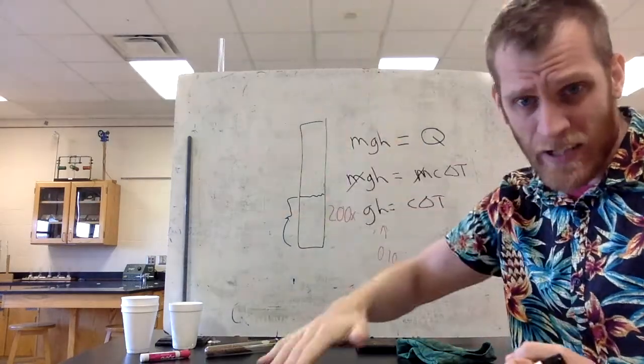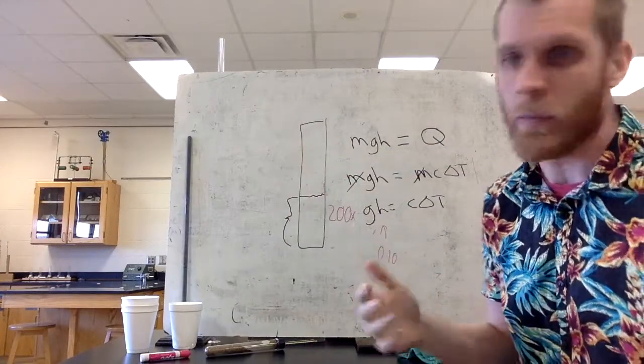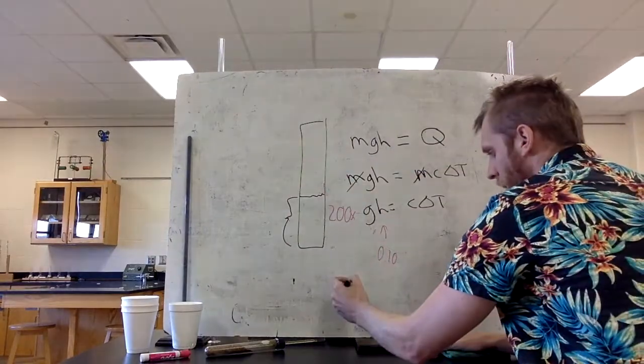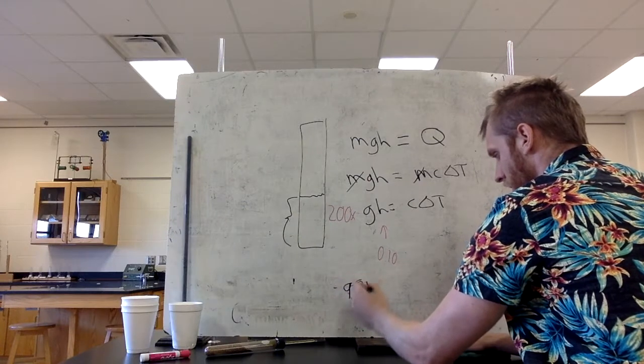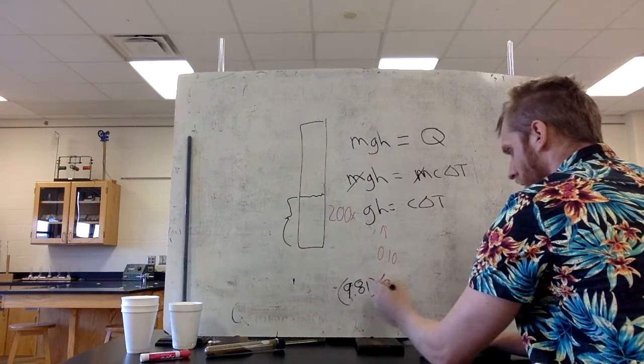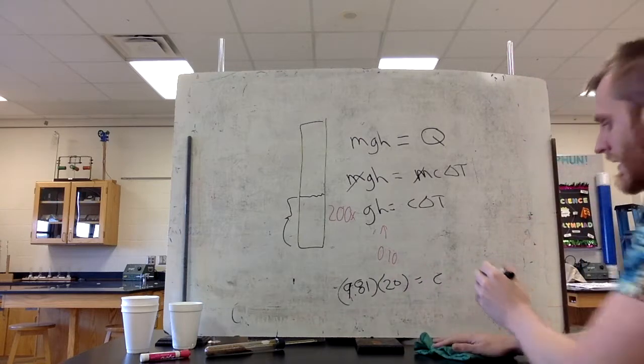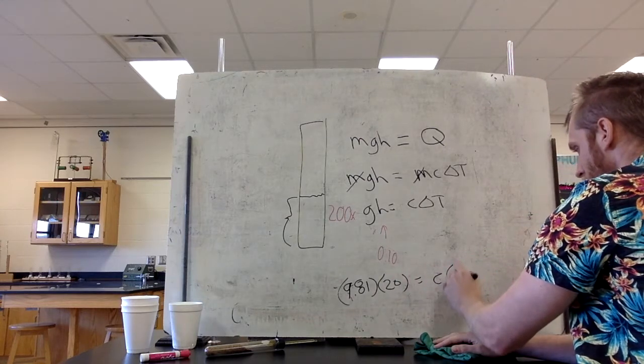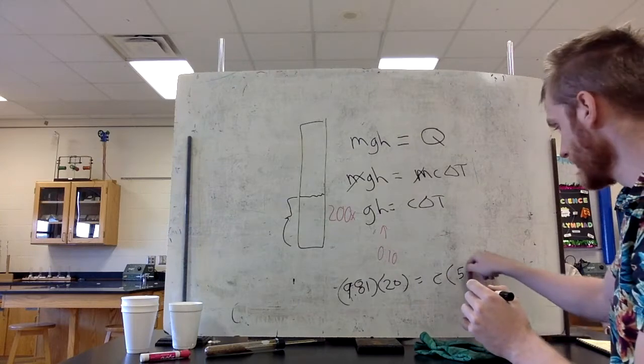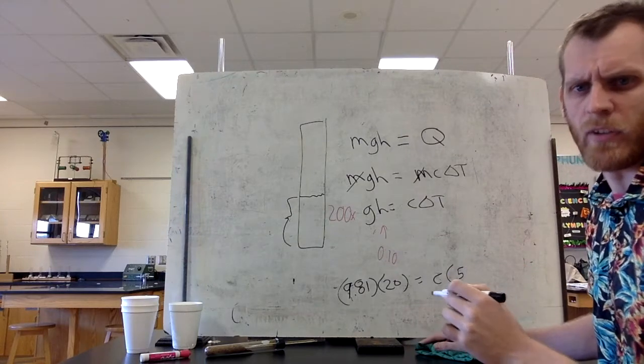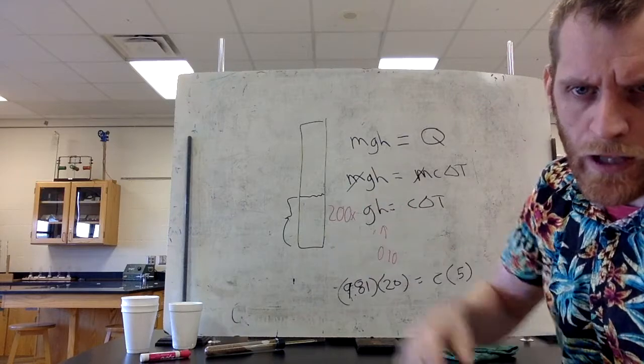It didn't travel straight down 20 meters, but it traveled back and forth a bunch of times 20 meters. So we have 9.81 for g times 20 equals the specific heat capacity of sand times 5, because the temperature changed... sorry, times 4. Yeah, no, 5. It went from 21 to 26. I forgot. It dropped down to 25 after I let it cool down.